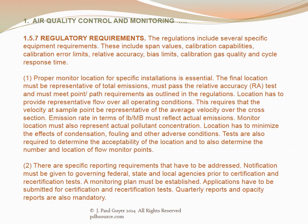Location has to provide representative flow over all operating conditions, requiring that the velocity at the sample point be representative of the average velocity over the cross section. Emission rate in terms of pounds per thousand BTUH must reflect actual emissions. Monitor location must also represent actual pollutant concentration and must minimize the effect of condensation, fouling, and other adverse conditions. Tests are also required to determine the acceptability of the location and the number and location of flow monitor points.